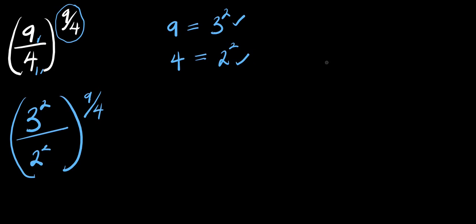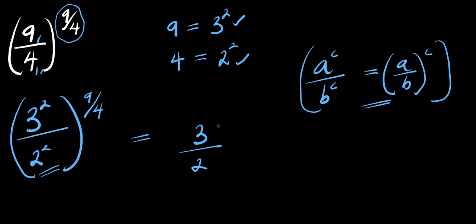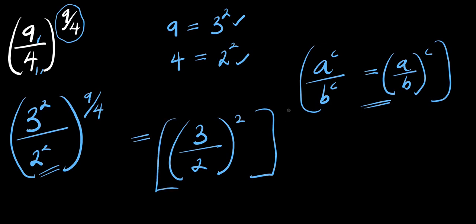Now, if you have a to the power of c divided by b to the power of c, this equals a divided by b, all raised to the power of c. So by applying this identity, you are simply going to have 3 divided by 2, where this is 3 to the power of 2 and this is also raised to the power of 9 over 4.